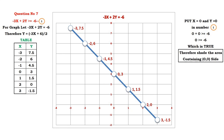Calculate the value of y for each value of x. The table of values is: x = -3 gives y = 7.5, x = -2 gives y = 6, x = -1 gives y = 4.5, x = 0 gives y = 3, x = 1 gives y = 1.5, x = 2 gives y = 0, and x = 3 gives y = -1.5.